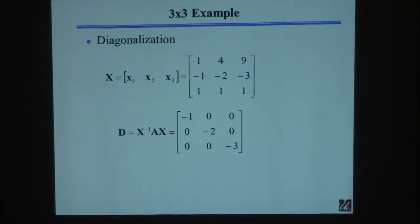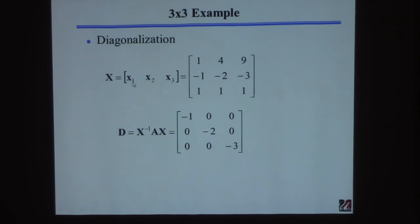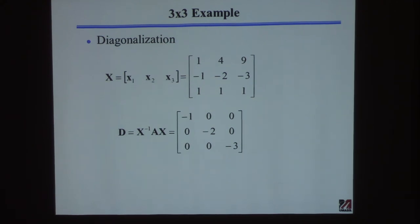In the ultimate tour de force, I formed the modal matrix from those three eigenvectors as columns — a 3x3 matrix. Then I computed the similarity transformation in MATLAB: X inverse times A times X. And you get a diagonal matrix with the eigenvalues minus 1, minus 2, minus 3 along the diagonal, exactly as expected. This idea of eigenvalues and eigenvectors we'll come back to when we start solving linear differential equations. Starting next week we'll begin systems of nonlinear algebraic equations.